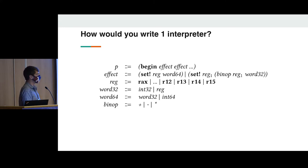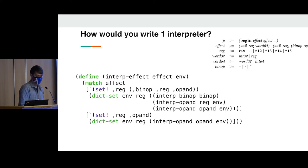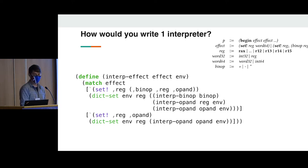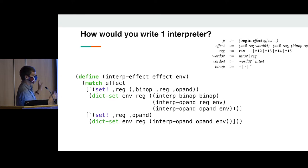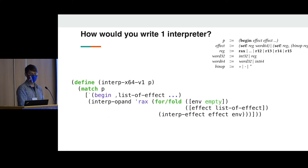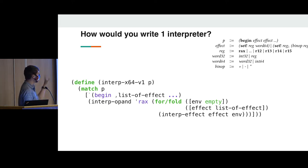How would you write one interpreter for this language? We're going to do some normal functional pattern — write a fold over the syntax of this tree, probably do some environment passing to keep things functional, and pattern match on each effect. Interpret it by setting a register in this environment. If I see the binary operation, I interpret the binary operation somehow, dereference the register, interpret the operand — either dereference the register or have an integer literal — then update my dictionary. I fold over the list of effects, and I assign some value to the top-level program by dereferencing RAX, from whatever calling convention, the System V ABI.